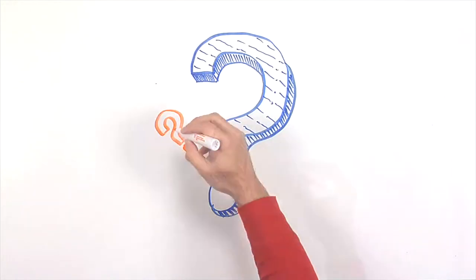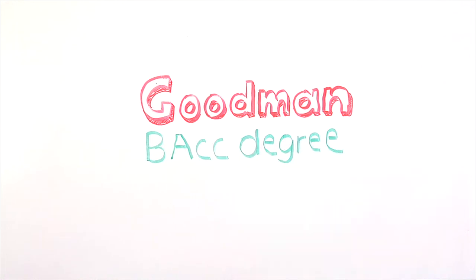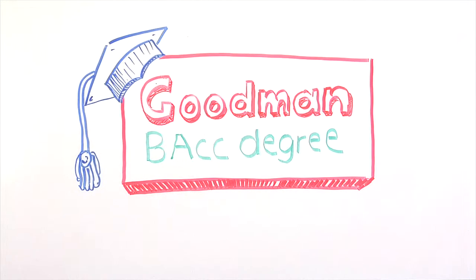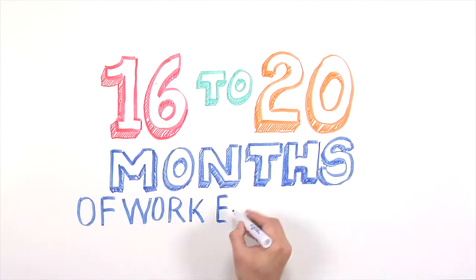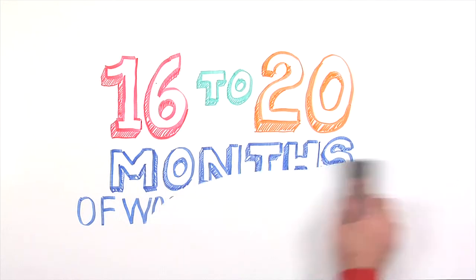So how does it work? Your first step is to complete your Bachelor of Accounting degree at Goodman. By the time you graduate, you can have 16 to 20 months of relevant work experience that will count towards your CPA designation through our competitive co-op program.